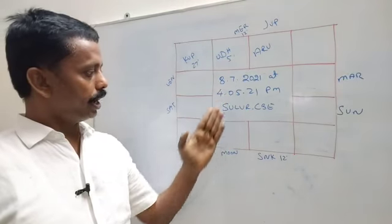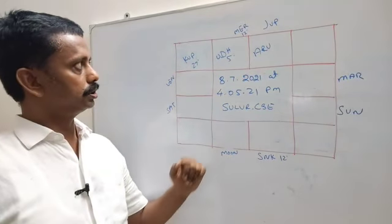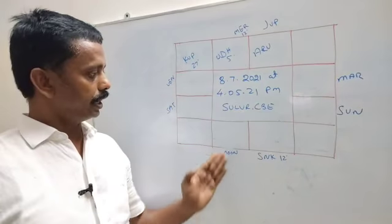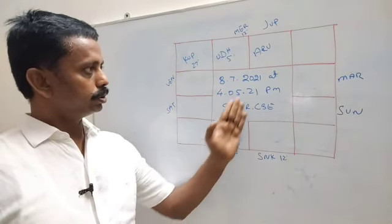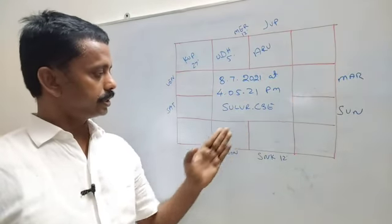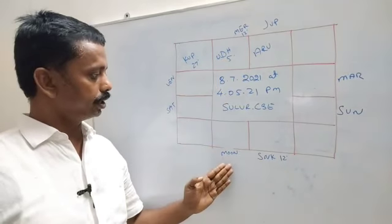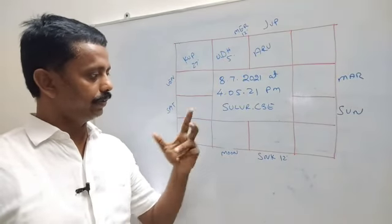So Udayalad 8th house. Mars, Moon Parivathna. Moon change 4th house, Mars in 8th house. Udayalad 8th house. So Udayalad very weak.